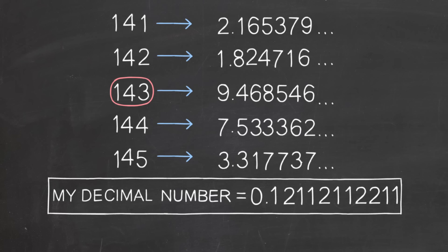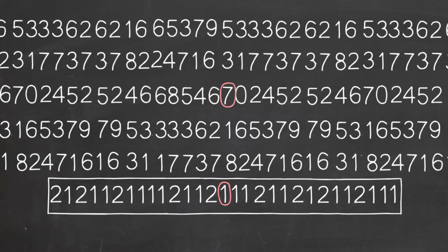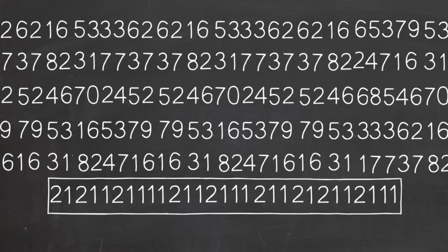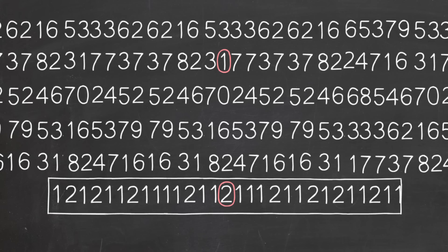The decimal I produce can't be on your list. Why? Could it be, say, your 143rd number? No, because the 143rd place of my decimal is different from the 143rd place of your 143rd number. I made it that way. Your list is incomplete. It doesn't contain my decimal number. And no matter what list you give me, I can do the same thing and produce a decimal that's not on that list.